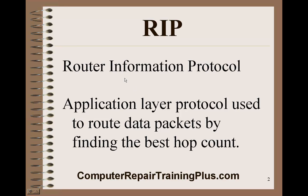RIP — Router Information Protocol — is an application layer protocol used to route data packets by finding the best hop count. It's a fairly crude way of trying to determine the best path. Most of the newer protocols today also look for the time it takes for data packets to get to the destination. Some routers might become congested, so using hop count alone sometimes might not be the best method.